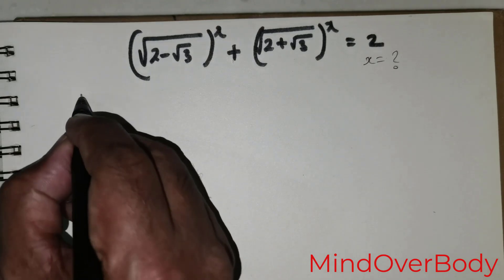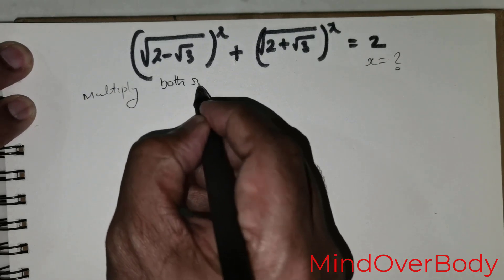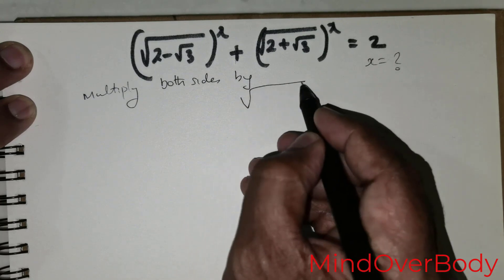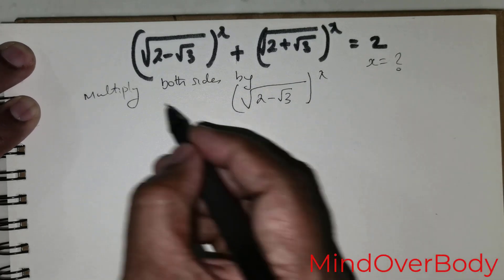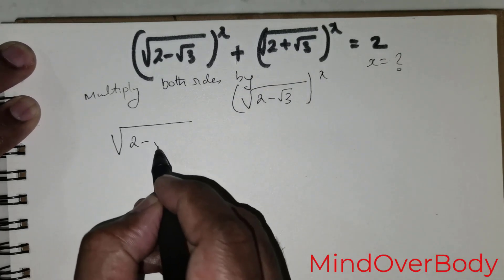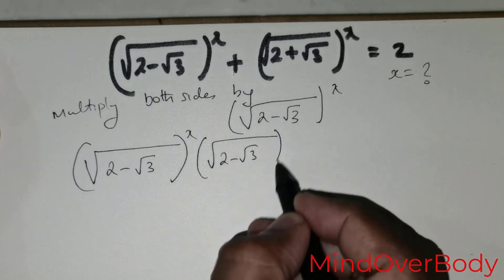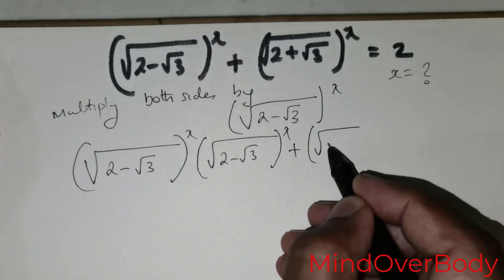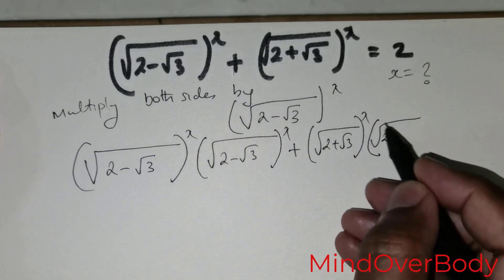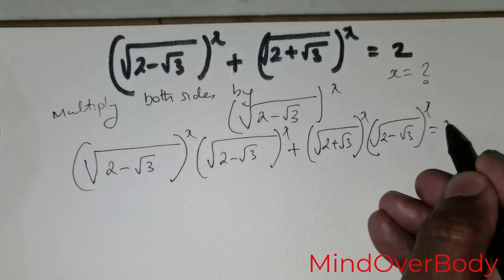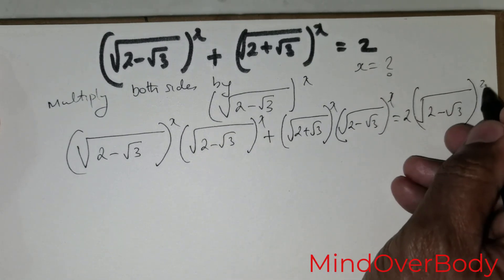Foremost, what I wish to do is multiply both sides by square root of (2 minus root 3) raised to the power x. So this would mean I have root of (2 minus root 3) raised to the power x, multiplied with root of (2 minus root 3) raised to the power x, plus root of (2 plus root 3) raised to the power x, multiplied with root of (2 minus root 3) raised to the power x, is equal to 2 times root of (2 minus root 3) raised to the power x.